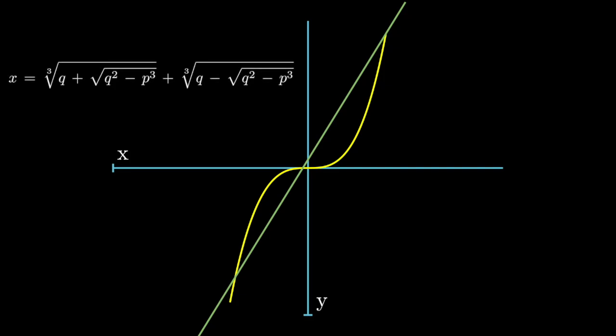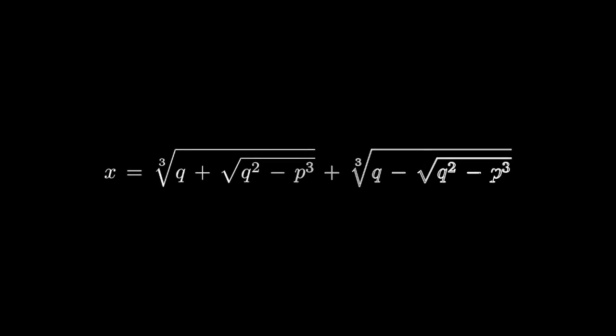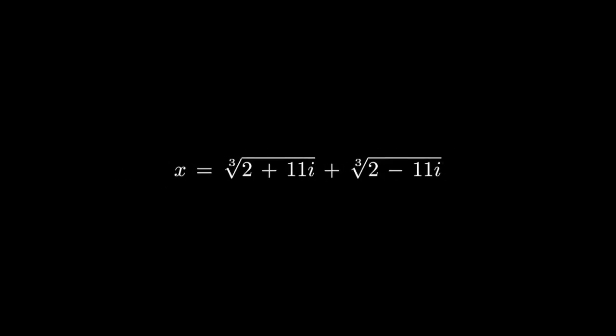Bombelli then did a very unpleasant thing. He assumed that a root of negative 1 was a thing. By this logic, the formula gives us x equals cube root of 2 plus 11i plus cube root of 2 minus 11i.